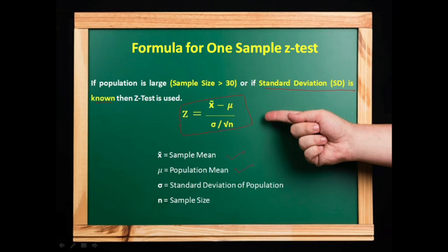X bar is the sample mean, μ is the population mean, σ is equal to standard deviation of population and n is sample size. We have to remember that standard error of mean is equal to σ by under root n. This is the formula for one sample Z-test.